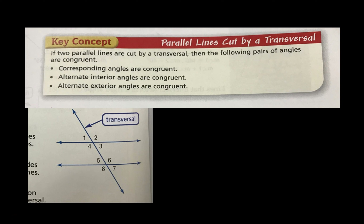Key concept: parallel lines cut by a transversal. Corresponding angles — like one and five, two and six — are congruent. In geometry terms, we use the congruent symbol. Alternate interior angles are congruent — so four and six would be congruent, meaning those two angles are equal. Alternate exterior angles are also congruent — so two and eight would be congruent.